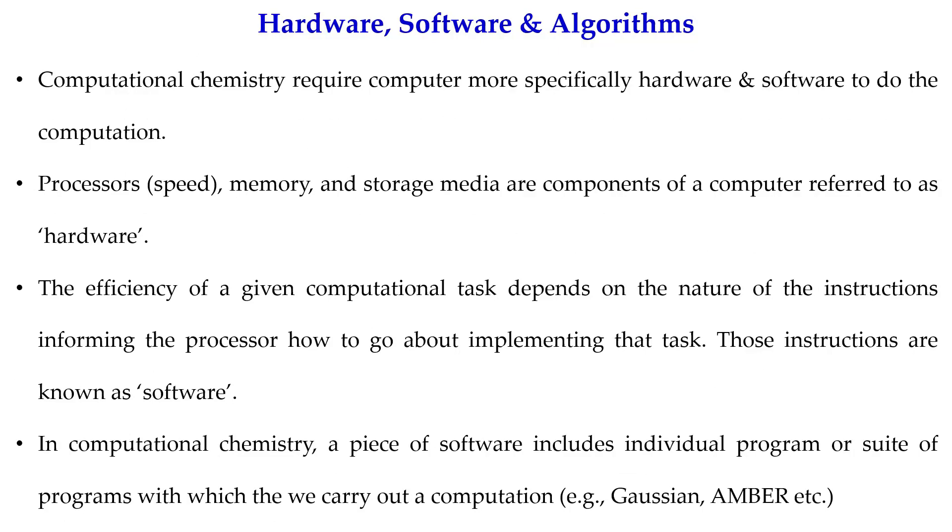Next is the hardware, software and algorithm. These terms need to be explained in the computational chemistry. You know that computational chemistry require computer more specifically hardware and software to do the computation. Processor that speeds up the calculations, memory and storage media are components of computer referred to as hardware. The efficiency of a given computational task actually depends on the nature of instructions. How you are instructing your computer to do the computation, that is the important thing. And these instructions are actually called as software. In computational chemistry the software can be a single program or can be a set of programs. We do the computation with these.